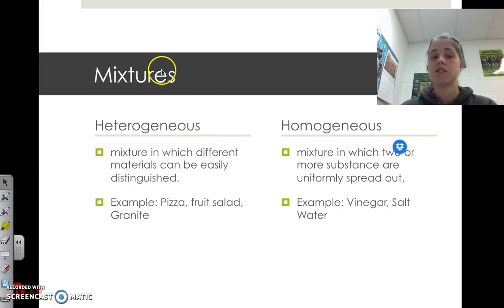So mixtures. Mixtures can either be heterogeneous or homogeneous. A heterogeneous mixture is a mixture in which different materials can be easily distinguished. The prefix hetero means many or multiple. And so if it's heterogeneous, that means there are multiple pieces that can be seen.